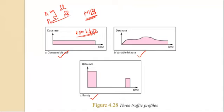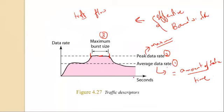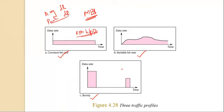In variable bit rate, the rate of data flow changes over time, with changes that are smooth rather than sudden and sharp. The average data rate is an average over the entire flow, while the peak data rate is the highest point. Maximum burst size is usually a small value. This type of traffic is more difficult to handle than constant bit rate, but it normally does not need to be reshaped.